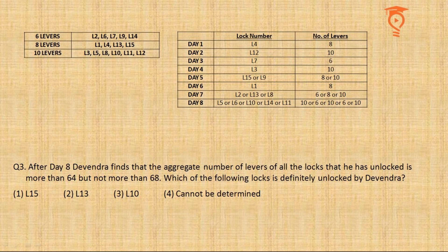Question 3: At the end of Day 8, the aggregate number of levers is more than 64 but not more than 68. Since all lever counts are even, the total must be either 66 or 68. The confirmed lever counts for Days 1, 2, 3, 4, and 6 sum to 42, leaving three uncertain days.